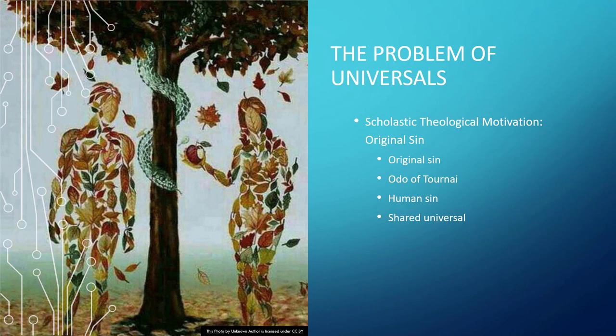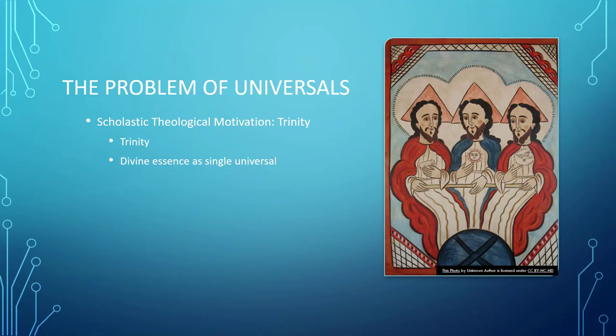The third motivation for the scholastics is another religious one: the Trinity. During the Middle Ages and throughout history, there have been serious fights over the Trinity and what it is, leading to battles over heresy and orthodoxy. But one solution to the problem of the Trinity — having the Father, Son, and Holy Spirit — is this: if you take the divine essence to be a single universal, the God property, that solves the problem. You can have three entities, Father, Son, and Holy Spirit, that all have the same universal. There are three that are one, which provides an explanation for the Trinity.